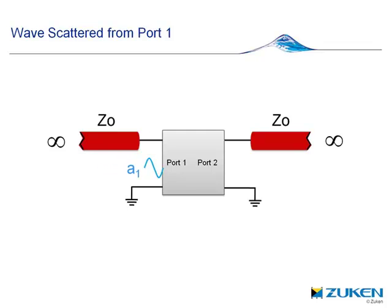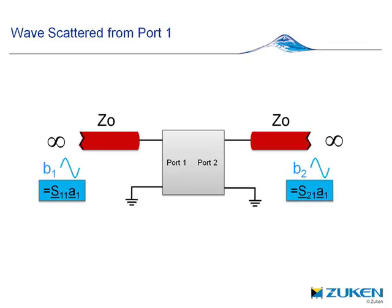So A1 arrives at port 1, is scattered to port 2 as B2, and is reflected back from port 1 as B1. The S-parameters at a single frequency are complex coefficients that transform the original wave to describe how it is scattered to each port.